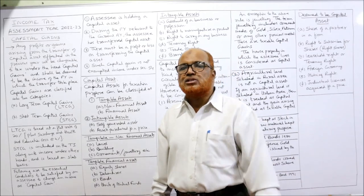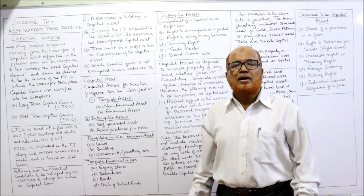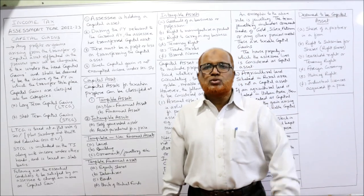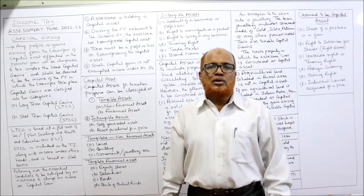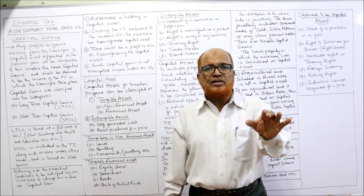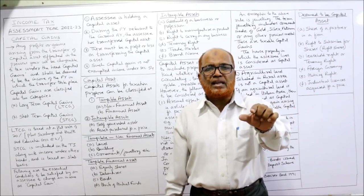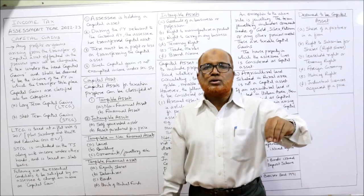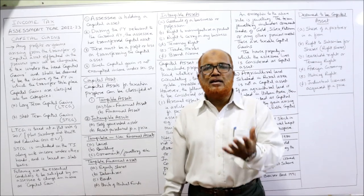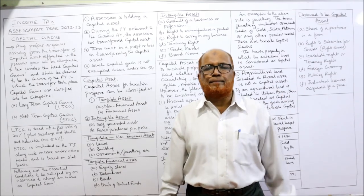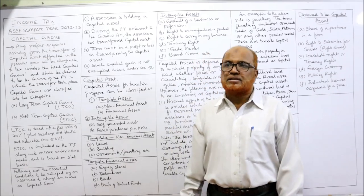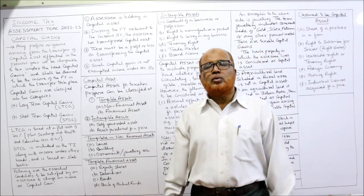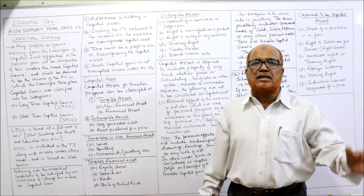Such gain shall be deemed income in the previous year in which the transfer took place. The current assessment year is 2022-23 and the previous year is 2021-22. So during the previous year 2021-22, if an assessee has transferred or sold a capital asset and a gain arises, that is called capital gain. Capital gains are classified into two categories: long-term capital gain (LTCG) and short-term capital gain (STCG).